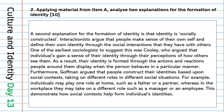For the second explanation, identity is socially constructed. Interactionists argue that people define their identity through social interactions with others. Cooley, one of the earliest sociologists to suggest this, argued that individuals gain a sense of identity through their perceptions of how others see them — identity formed through others' actions and reactions. Furthermore, Goffman argued that people construct identities based on social contexts, taking on different roles in different situations; for example, playing the role of father at home while taking on manager or employee roles at work. This demonstrates how social contexts help form individual identities.